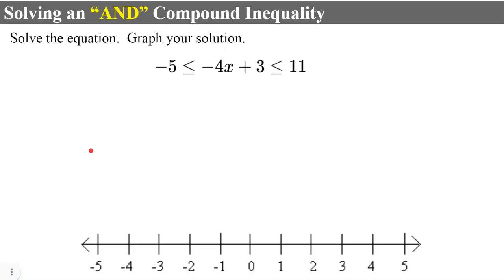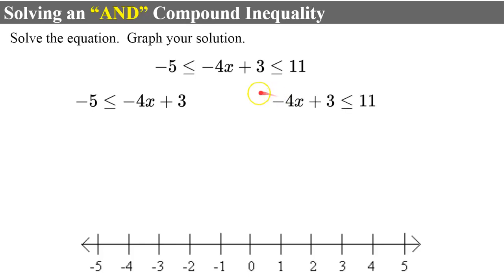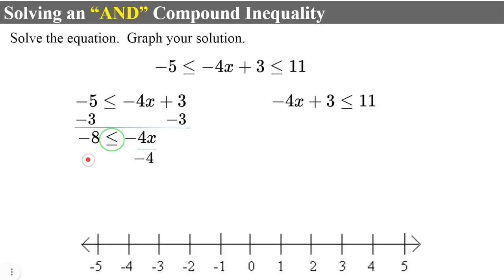Now let's talk about solving an AND compound inequality. We're going to solve and graph our solution. This is an AND written in combined form, so we split it into two inequalities: negative 5 less than or equal to negative 4x plus 3, and negative 4x plus 3 less than or equal to 11. For the first, subtract 3 from both sides to get negative 8 less than or equal to negative 4x. Then divide both sides by negative 4 and flip the sign — giving positive 2 greater than or equal to x.